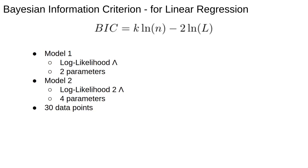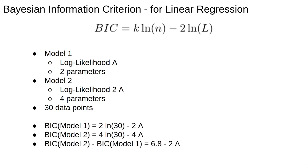As an example, let's say we have two models, one with the log likelihood lambda that uses two parameters, and the other with twice the log likelihood but using twice as many parameters. Let's also say there are 30 measurements. Computing the difference in BIC, we get 6.8 minus 2 times lambda.